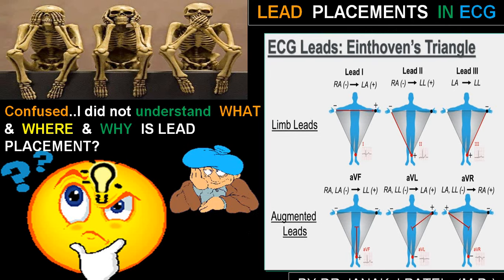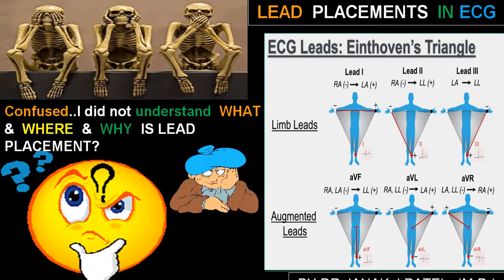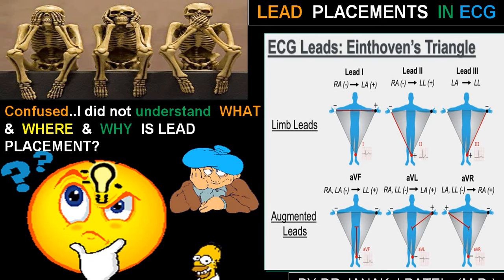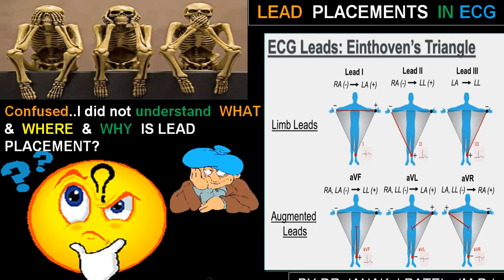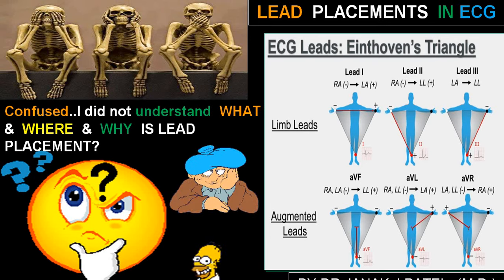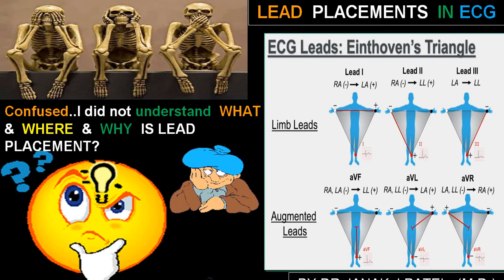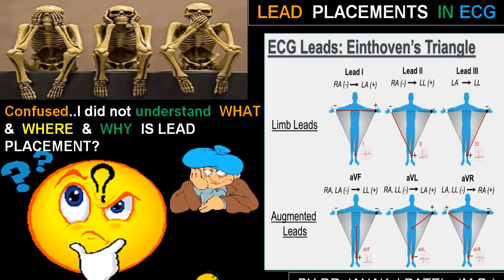Lead placement in an ECG: we have limb leads — Lead 1, Lead 2, Lead 3 — and augmented leads AVF, AVL, and AVR, placed by putting electrodes on the right arm, left arm, right foot, and left foot. The difference between right arm and left arm is Lead 1; between right arm and left lower limb is Lead 2; left arm and left lower limb is Lead 3. Left foot is AVF, left arm is AVL, and right arm is AVR.